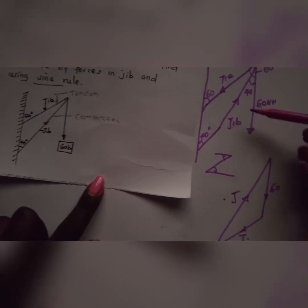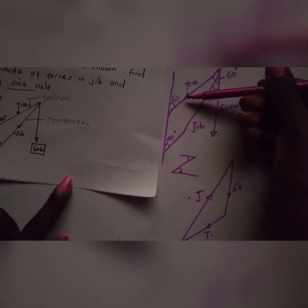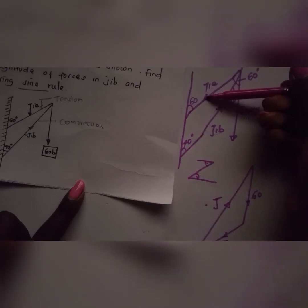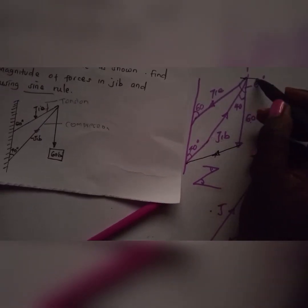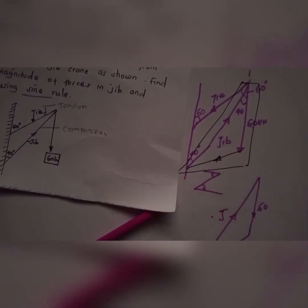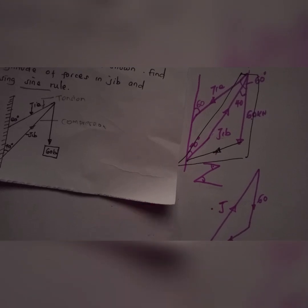If you look at the diagram, we have simply transferred the force of the tie to this side — it's like we have the tie there. We are going to pick this triangular portion for the sine rule. The angle of 40 degrees remains here.